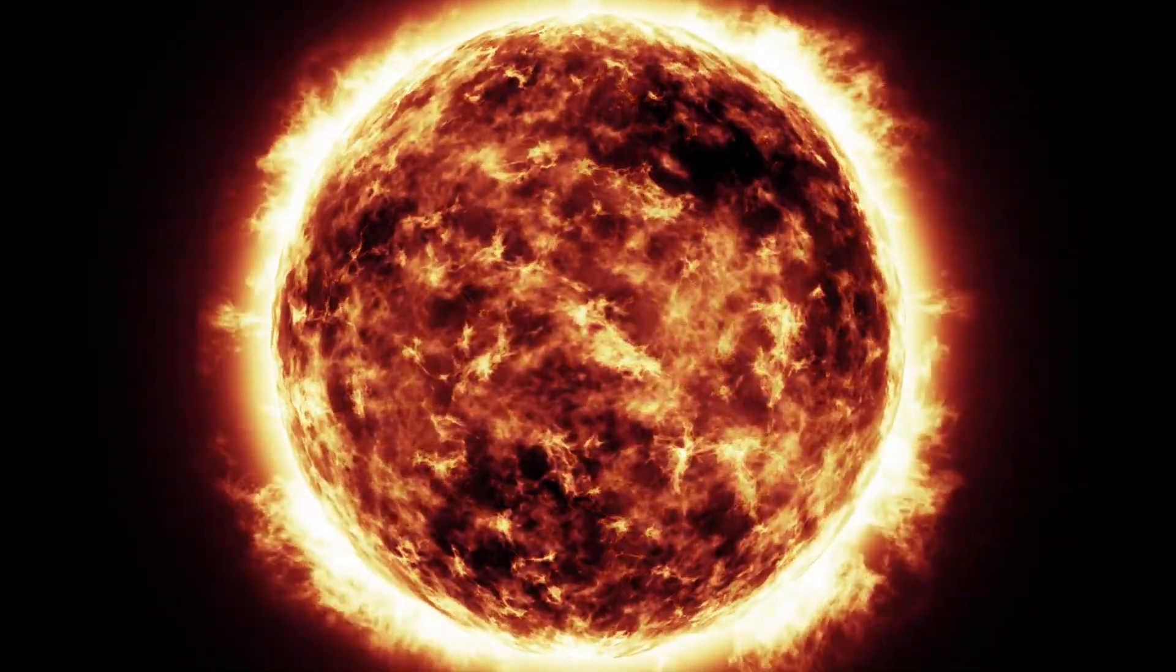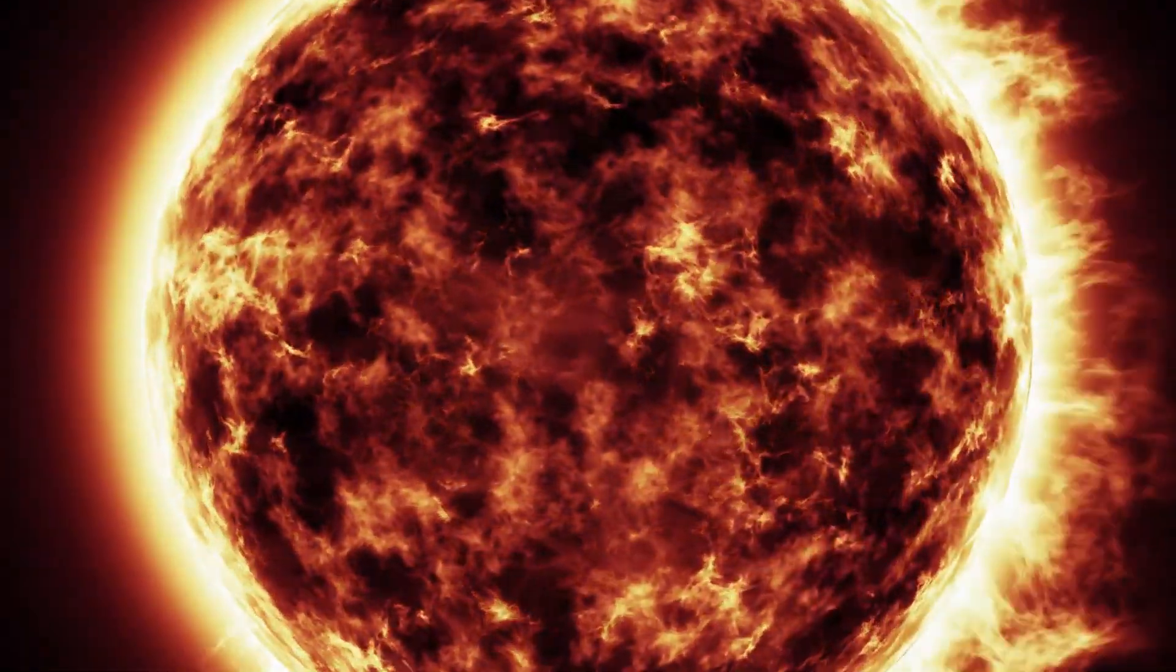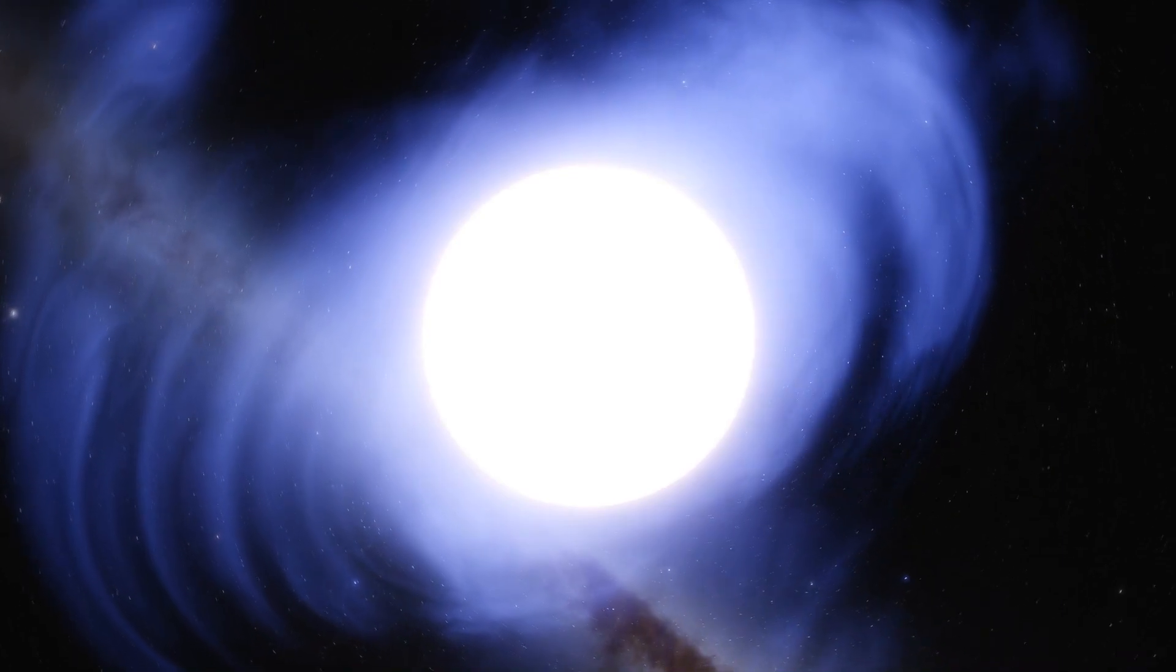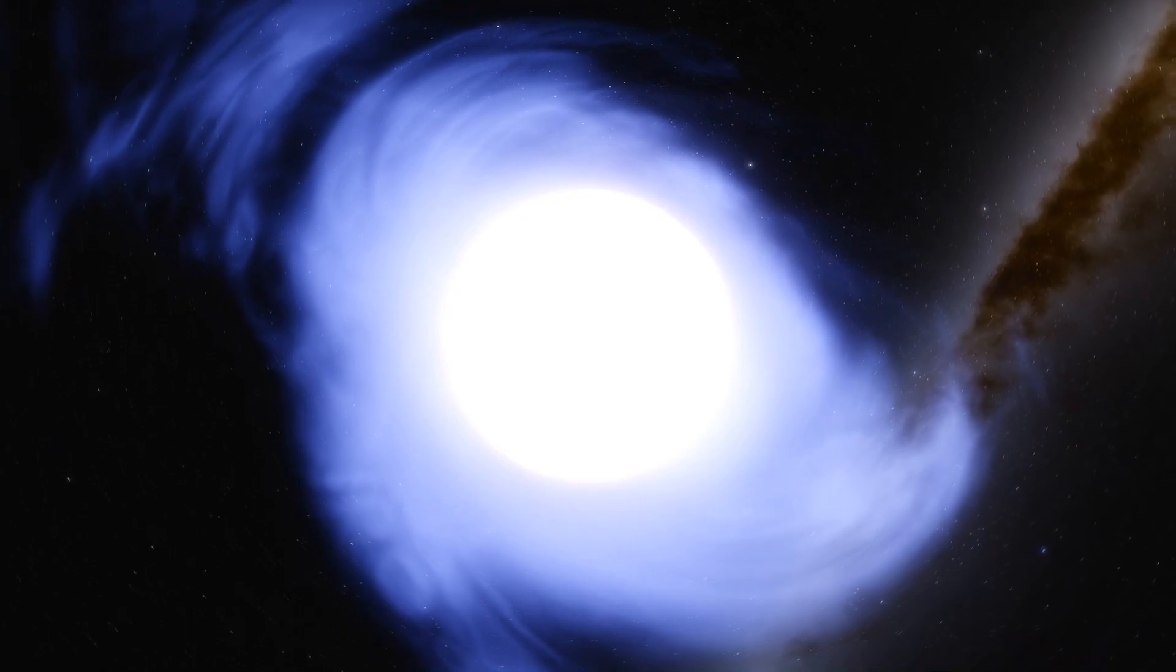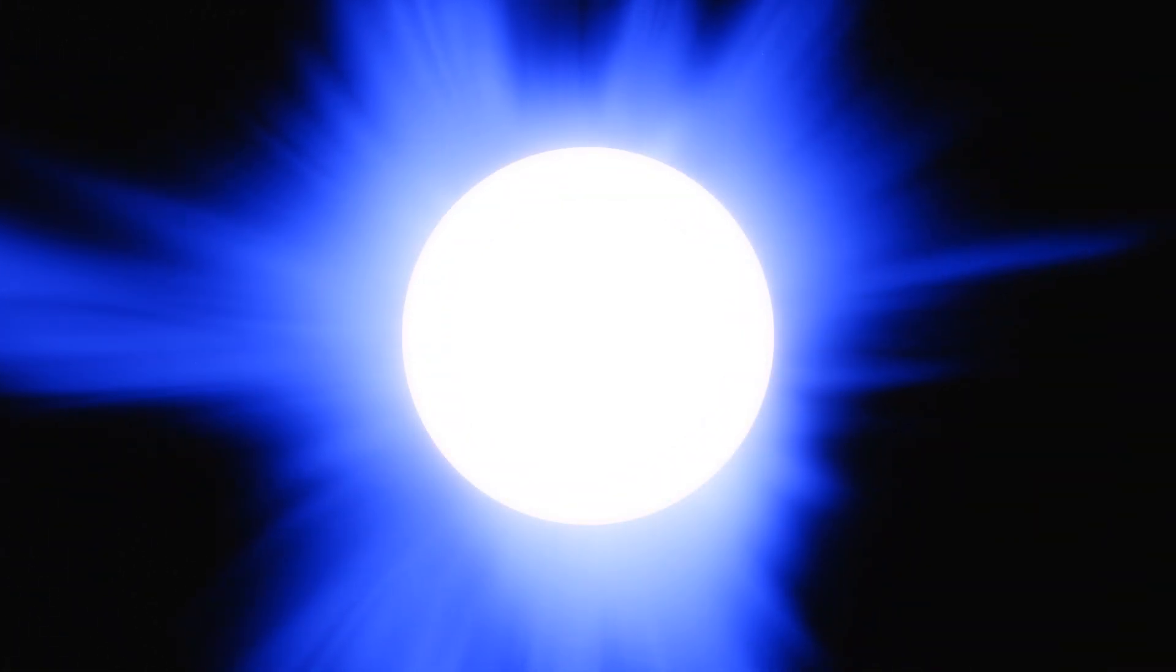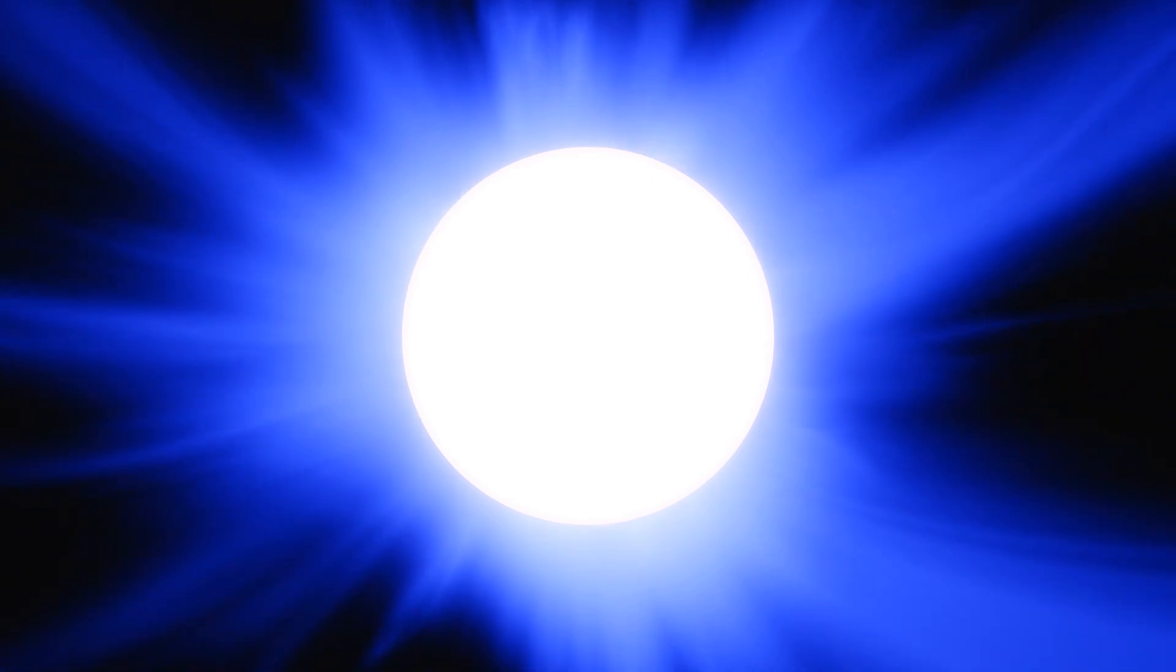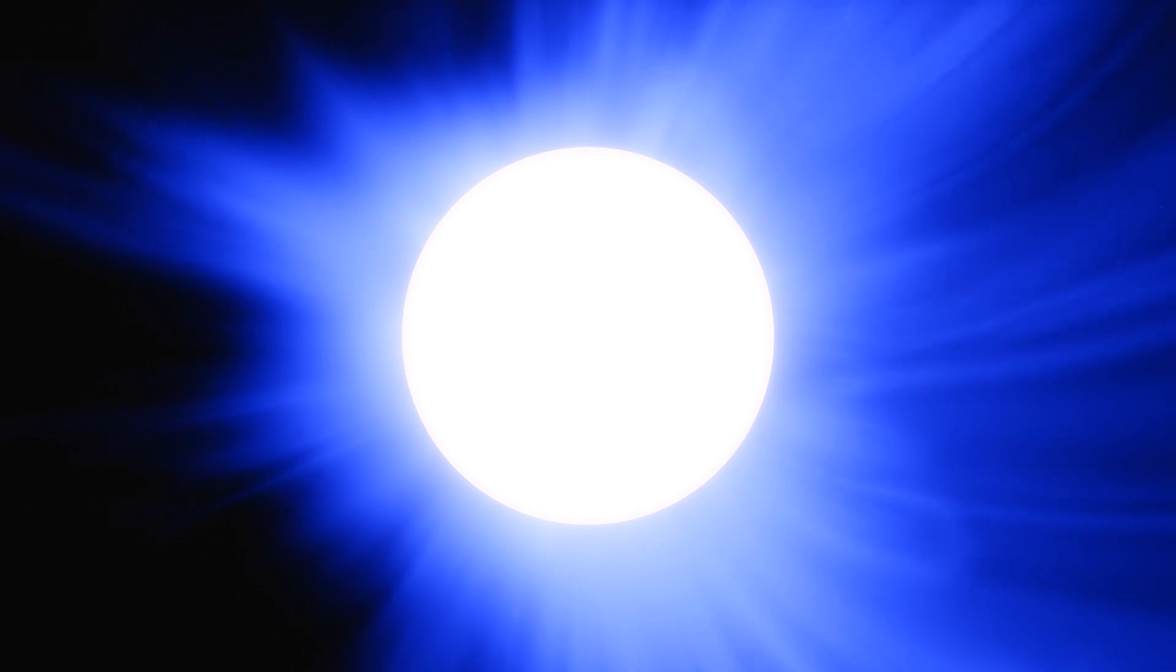Luminosities, sizes and temperatures of main sequence stars vary in a fairly wide range. There are luminosities from 10 to the power of minus 4 to 10 to the power of 6 solar luminosities, radii from 0.1 to more than 10 solar radii, and temperatures from 3 to 50,000 Kelvin. Nevertheless, all these magnitudes are closely related to each other, as a result of which, the main sequence stars in the Hertzsprung-Russell diagram occupy an almost diagonal band passing from bright blue stars to dim red ones.